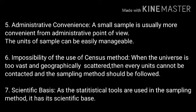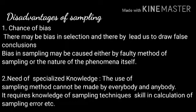Fifth, administrative convenience — a small sample is usually more convenient from an administrative point of view, as the units can be easily managed. Sixth, impossibility of the use of census method — when the universe is too vast and geographically scattered so that every unit cannot be contacted, the sampling method should be followed. Seventh, scientific base — since statistical tools are used in the sampling method, it has a scientific base.